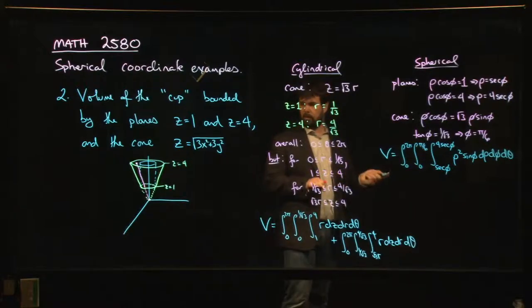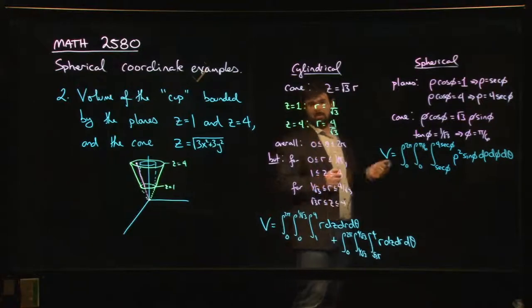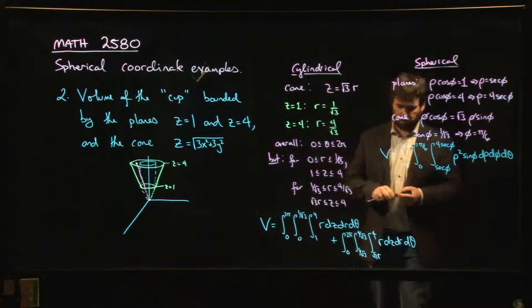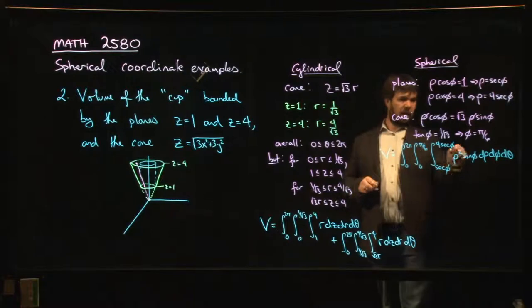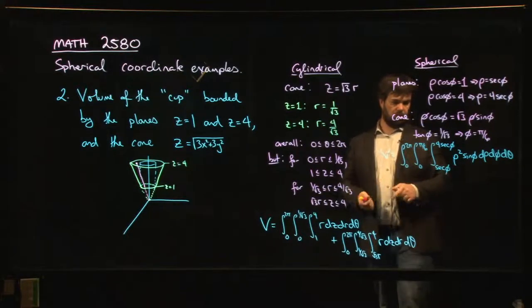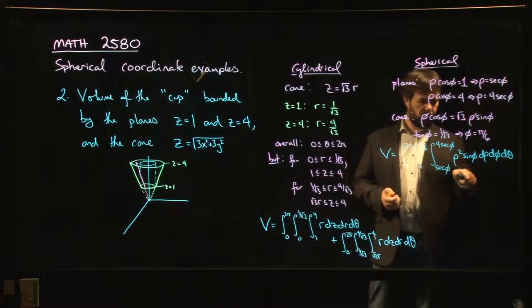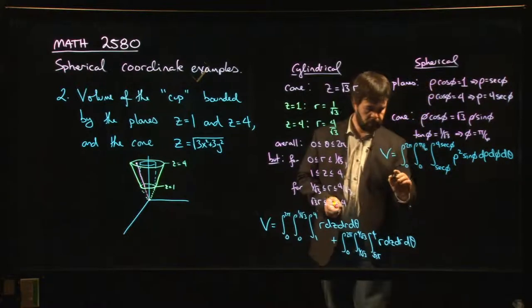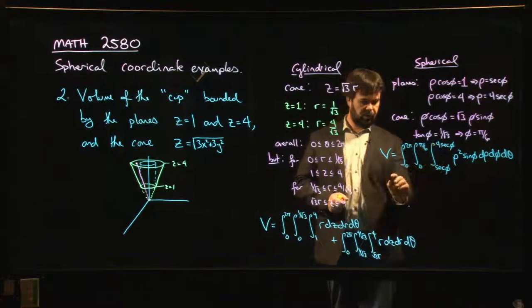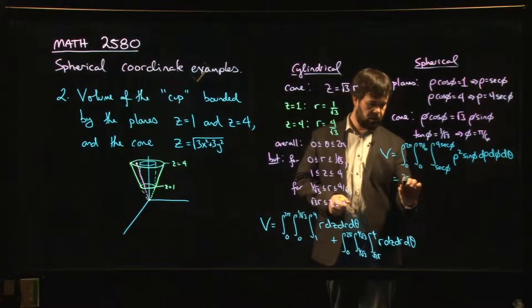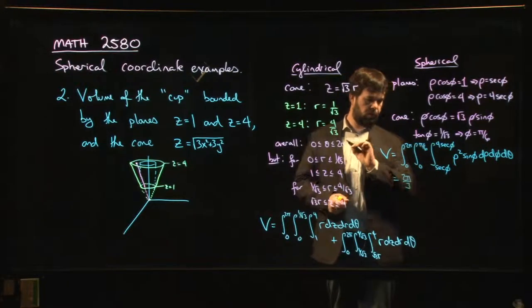You can stop here if you want. We're already at the ten minute mark. That's probably long enough for a video. If you want to stick around for a few more seconds, we can at least see what happens when we do the rho integral. So we're going to get one third rho cubed. And by the way, we get a two pi from the theta, so let's just put that out front. Two pi over three.